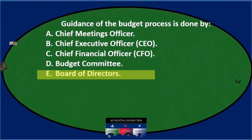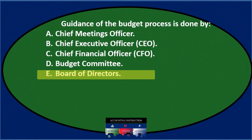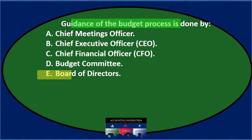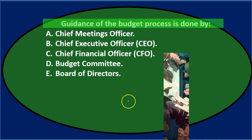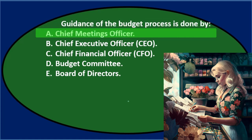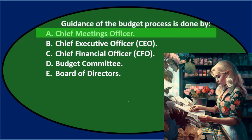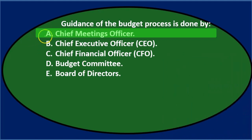Or E, Board of Directors. Let's go through this using the process of elimination. Guidance of the budget process is done by — so who is responsible for guiding the budget process? A, Chief Meetings Officer — that's a funny term. I'm not sure there's actually a thing called Chief Meetings Officer. It doesn't sound like a good title, so I'm not going to go with that.